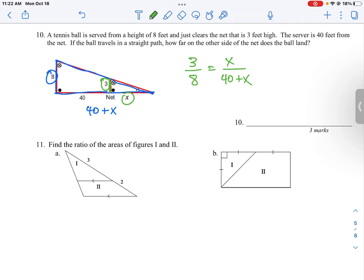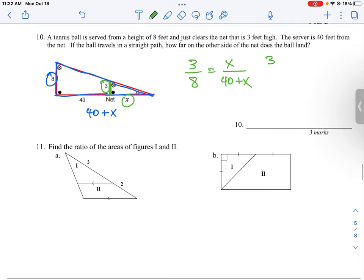So our ratio is 3 over 8 is equal to x over 40 plus x. So we can then just cross multiply and have an equation that works out like this. 3 times 40 plus x is equal to 8x, and this is going to be 120 plus 3x is equal to 8x.